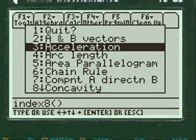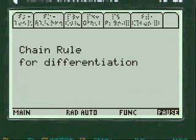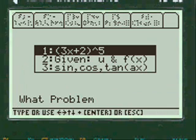You choose chain rule by scrolling down to it or pressing the number before it, in this case the number 6. Then press enter.